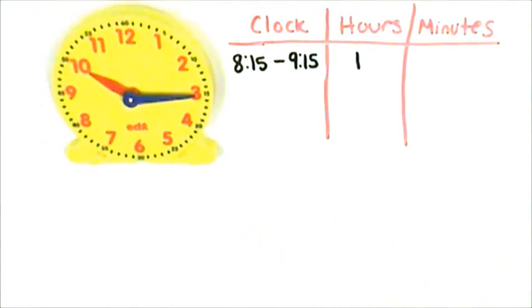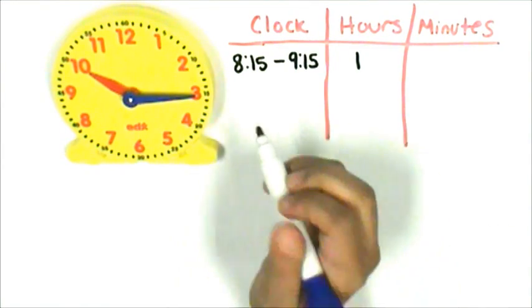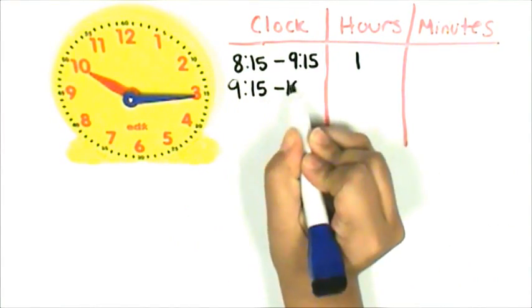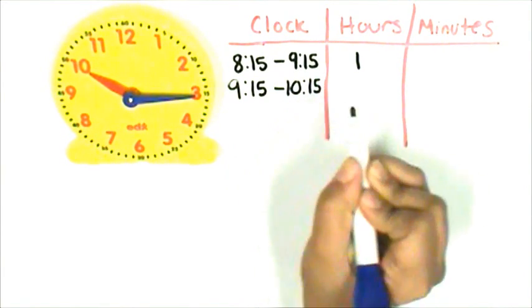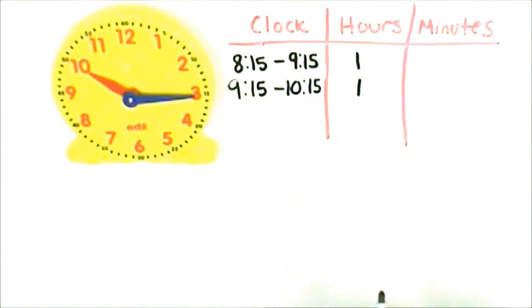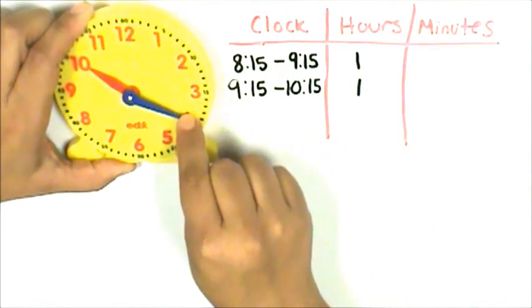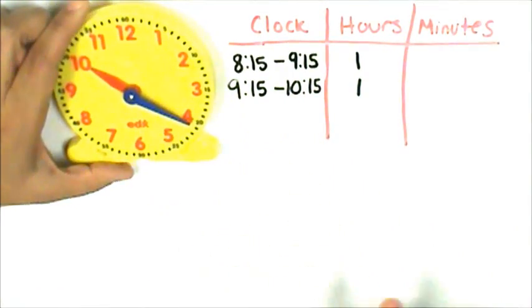One hour later it is 10:15. So from 9:15 to 10:15 it was one hour. But we're not finished. Practice finished at 10:22 and we're at 10:15. Let's move the minute hand from 10:15 to 10:20, that's 5 minutes.